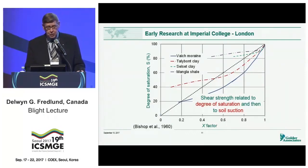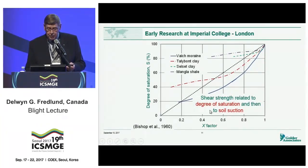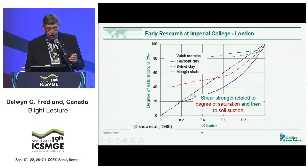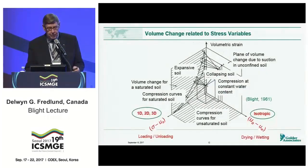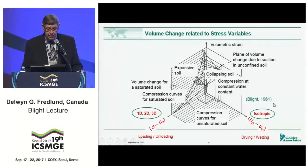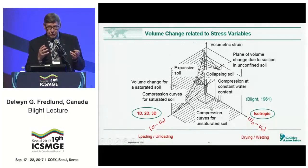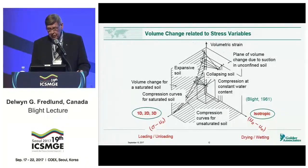Very significant research was done at Imperial College in London under Bishop and his graduate students. They produced graphs where they plotted a ratio of the difference between the saturated shear strength and the unsaturated shear strength as a function of the degree of saturation. Over time, we discovered that the degree of saturation could be measured relative to soil suction, and that relationship allowed us to estimate the shear strength of unsaturated soils. Very significant work was also done at Imperial College on volume change, including a figure from Blight 1961.